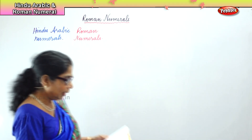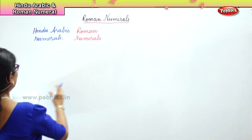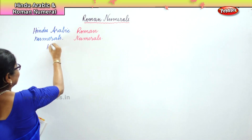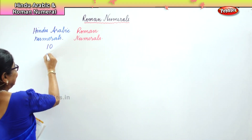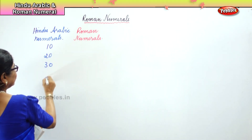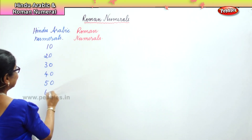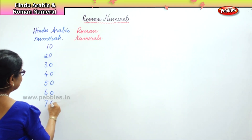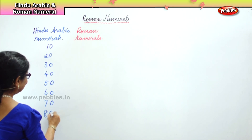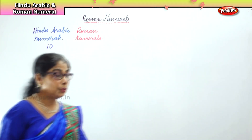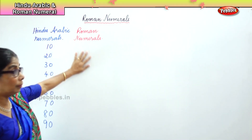At the side we will write the Hindu Arabic also. Now here we are going from 10, we are going to write 10, 20, 30, 40, 50, 60, 70, 80 and 90. We are going to build the Roman numerals.